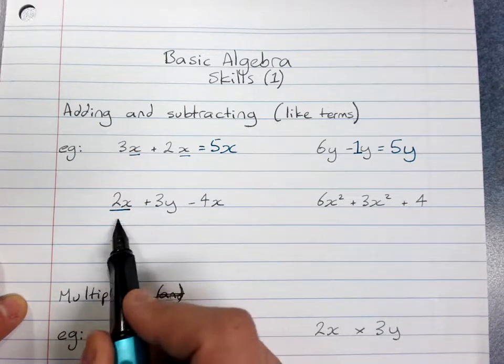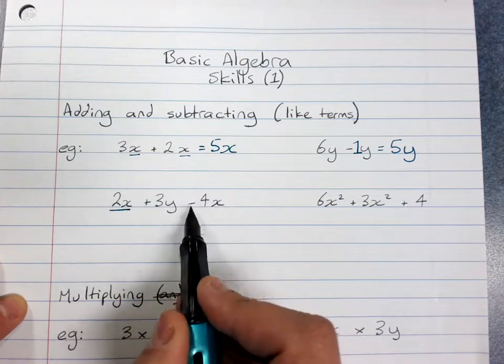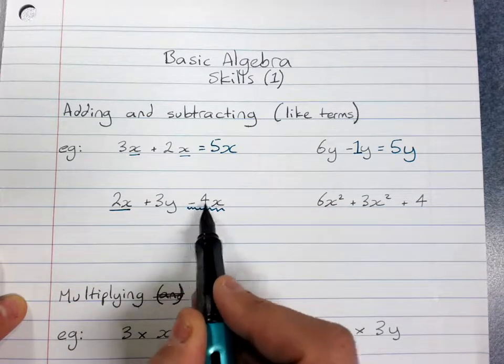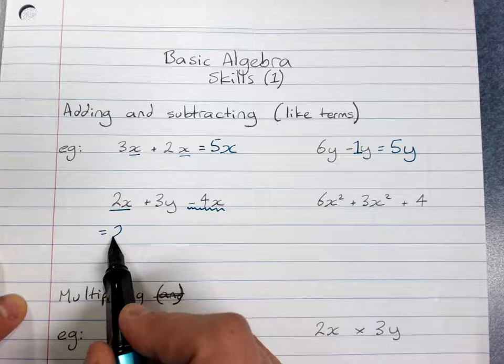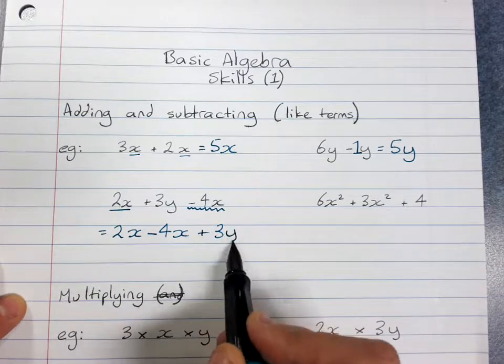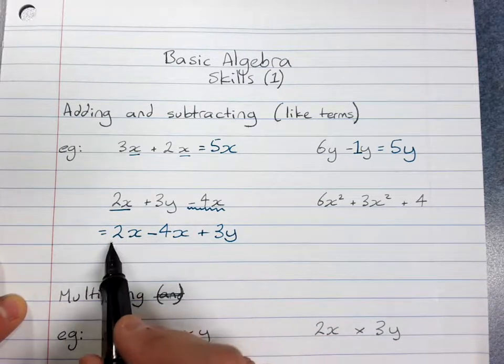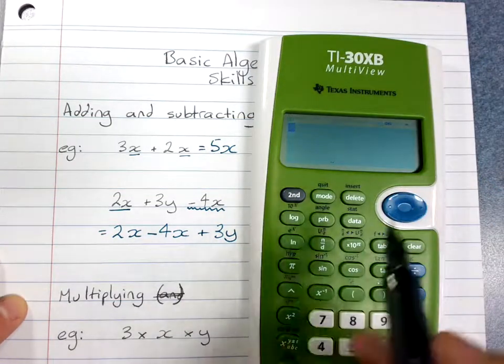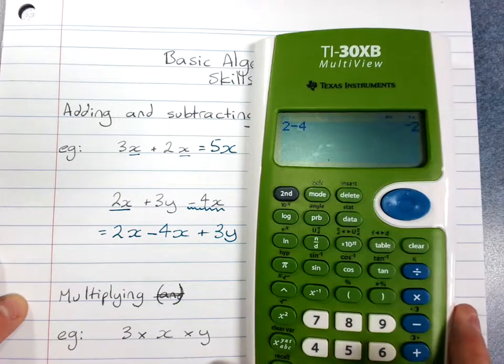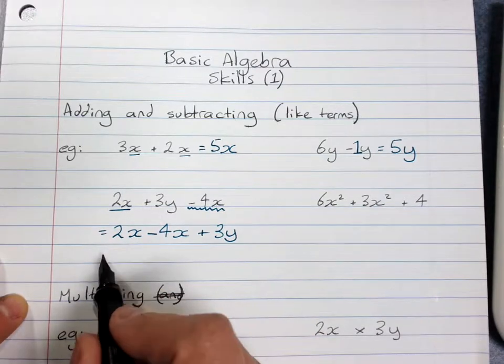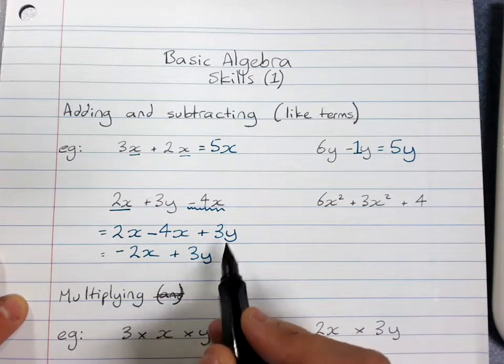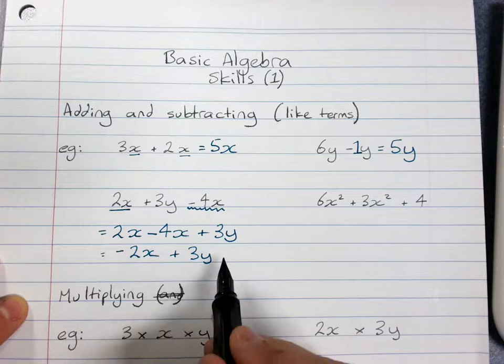So this says, now you can rearrange if you want to make it easier. Put all the like terms together and remember the sign goes with the thing that comes after it. So this negative belongs to the 4x. Rearrange it if you want. That's 2x minus 4x plus 3y. You add or subtract the coefficients and it's a really good idea when there's negatives just to get your calculator. 2 minus 4 equals, that's negative 2. So I'm going to have negative 2 lots of x plus 3y. And that's as far as I can take that, because these are two different things. And I'm just saying how many lots of them I've got.